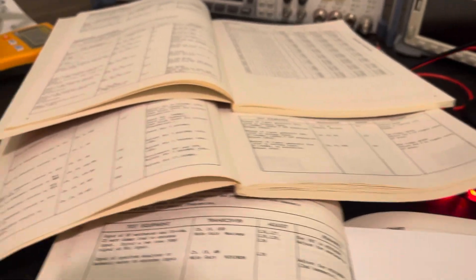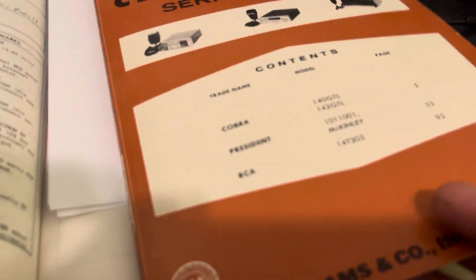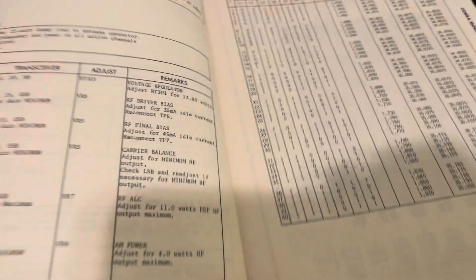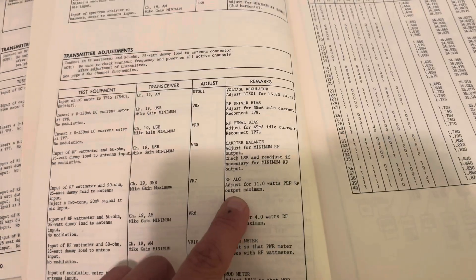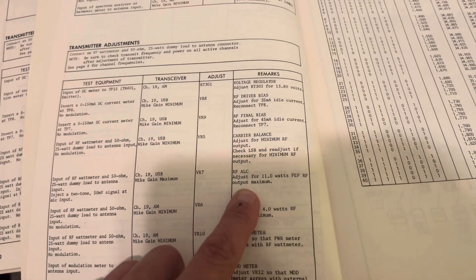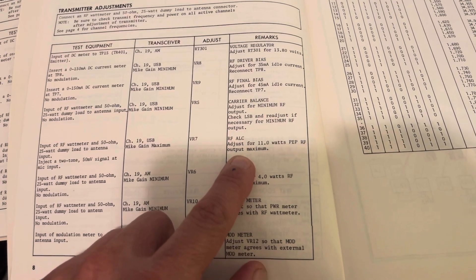If you look at Sam's service manuals, here is a service manual for a Cobra 140-142 GTL. For SSB ALC, they say adjust for 11 watts PEP, 11 watts peak.